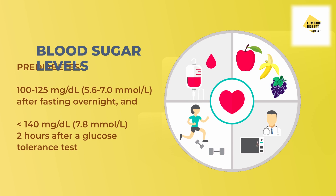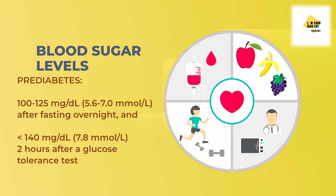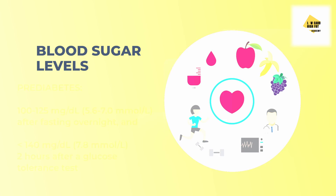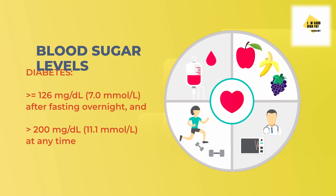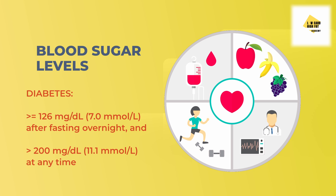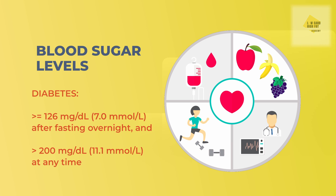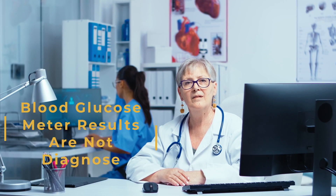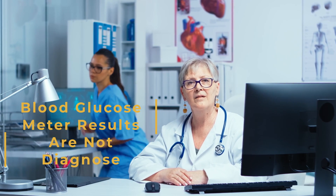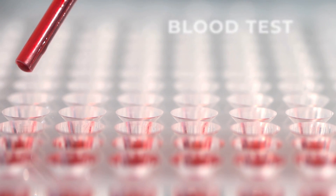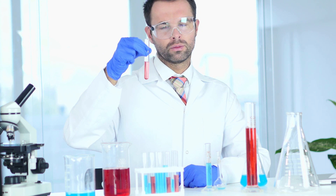Pre-diabetes is indicated by blood sugar between 100 to 125 mg/dL (5.6 to 7.0 mmol/L) after fasting overnight, or higher than 140 mg/dL (7.8 mmol/L) two hours after a glucose tolerance test. Diabetes is indicated by 126 mg/dL (7.0 mmol/L) or higher after fasting overnight, or higher than 200 mg/dL (11.1 mmol/L) at any time. However, blood glucose meter readings alone are not enough to diagnose diabetes or pre-diabetes — a healthcare provider's blood test is required to confirm a diagnosis, and a single abnormal reading is usually not enough.